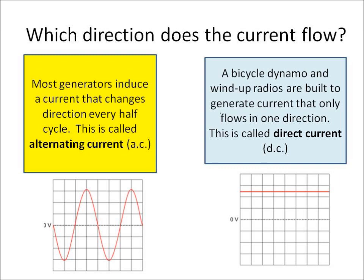However, there are some special types of generator which produce a direct current, such as a bicycle dynamo or wind-up radio. If the current only flows in one direction, we call that a direct current, and that's shown on the bottom right.